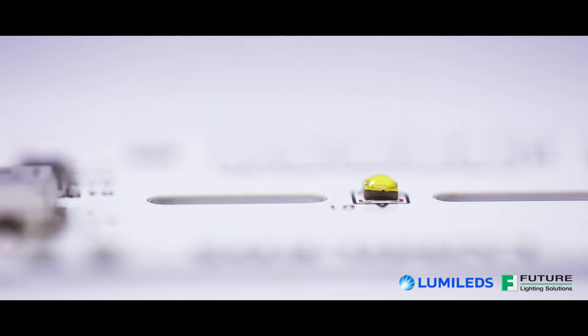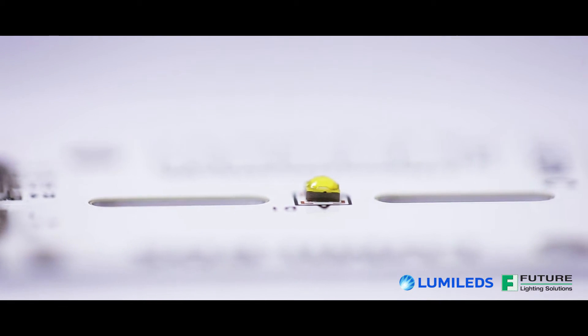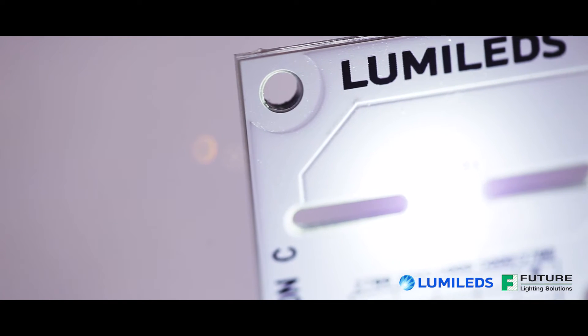Luxion C uses a special dome for the perfect balance between light extraction and small source size for high candelas per lumen and luminance, enabling sharper beams and higher brightness.